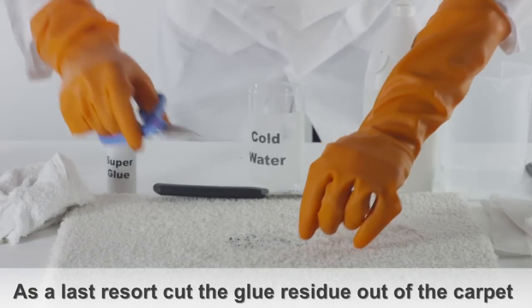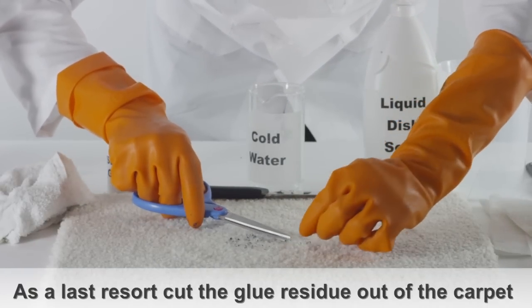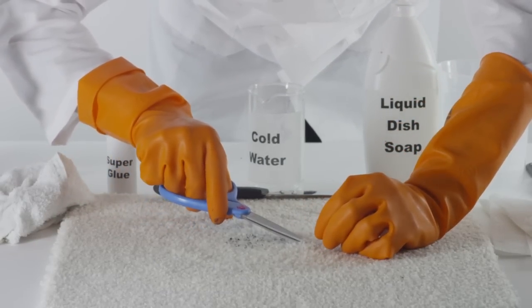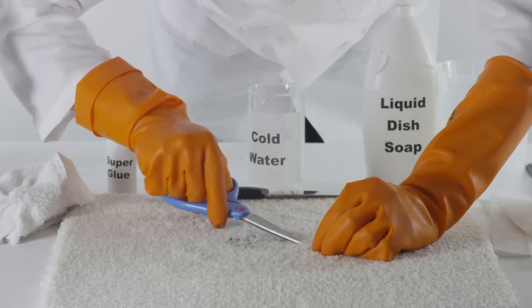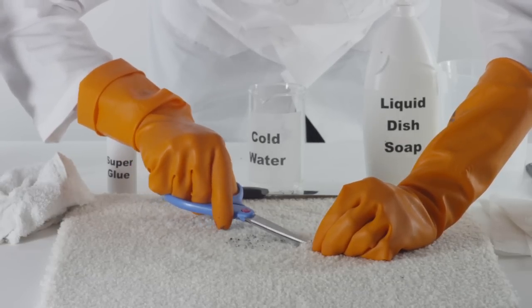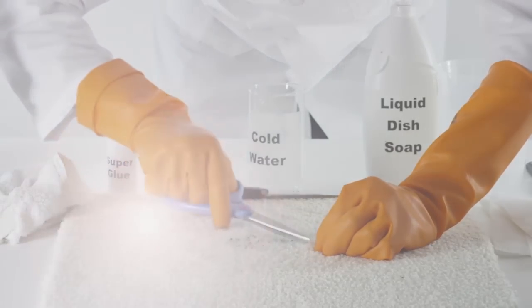As a last resort, grab a pair of household scissors. Slowly and carefully cut the affected area of the carpet to remove the glue residue. This method only works on thick carpets with long fibers.